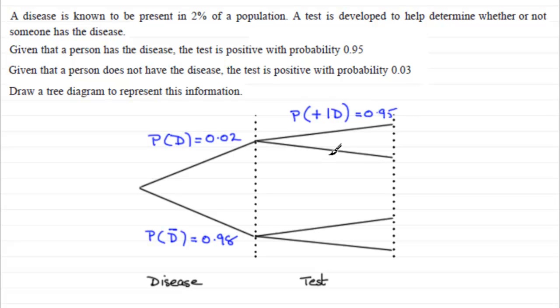So these two branches must add up to 1, so the probability that it's not positive, or you might as well say negative, given that they had the disease, well that's got to be 1 minus 0.95, which is going to be 0.05. So that's that one done.